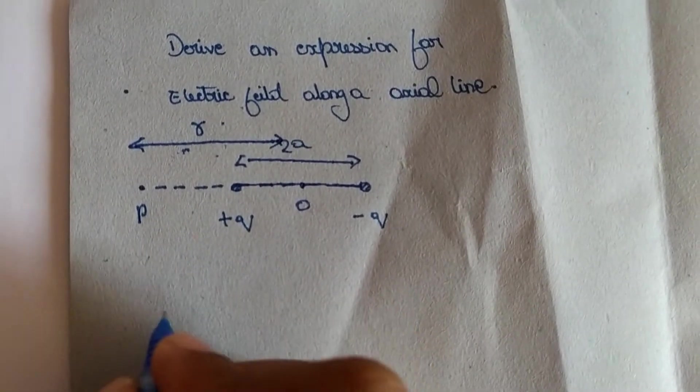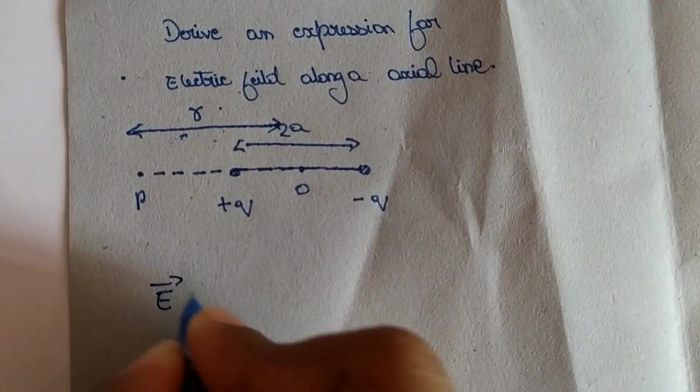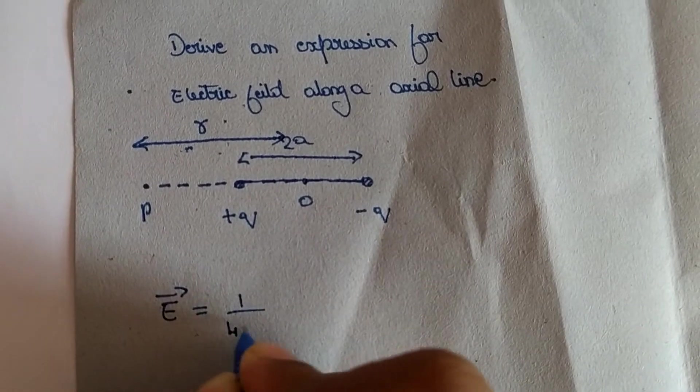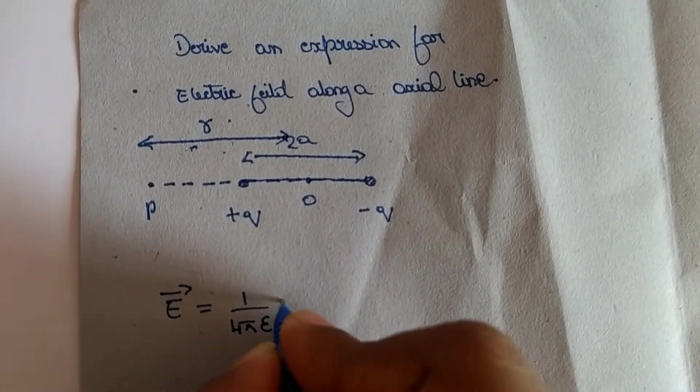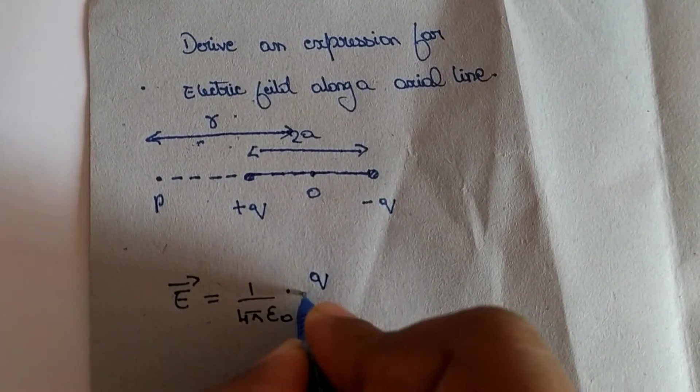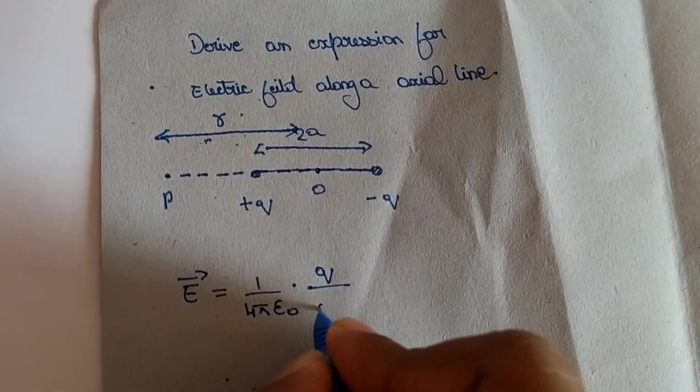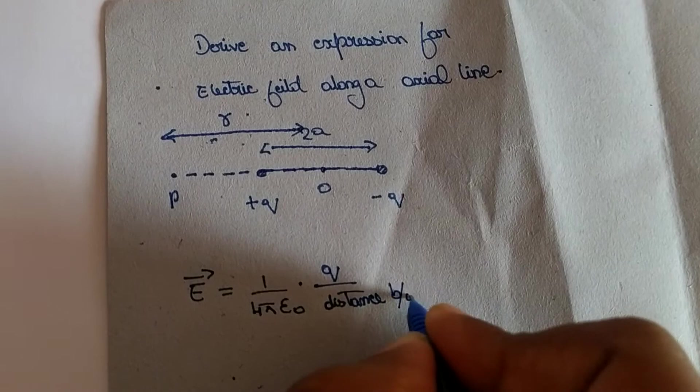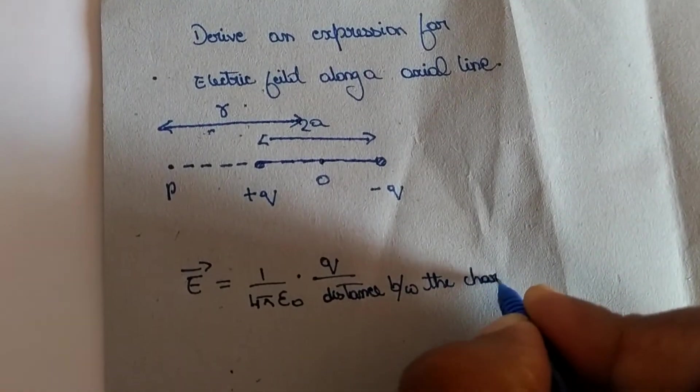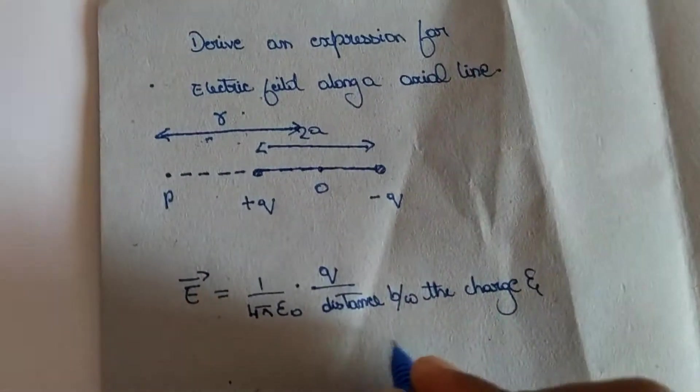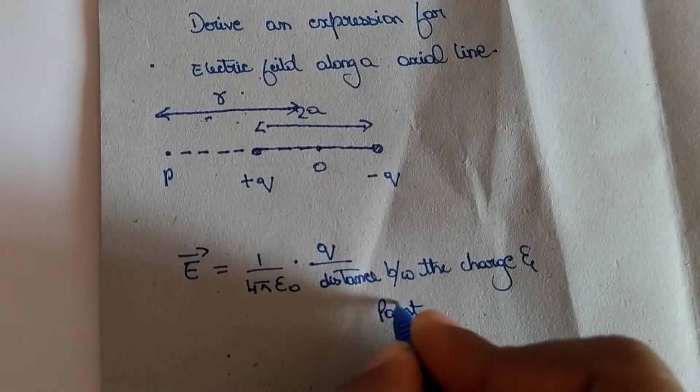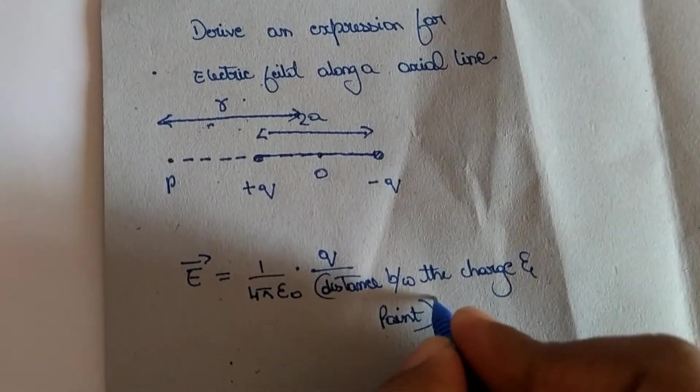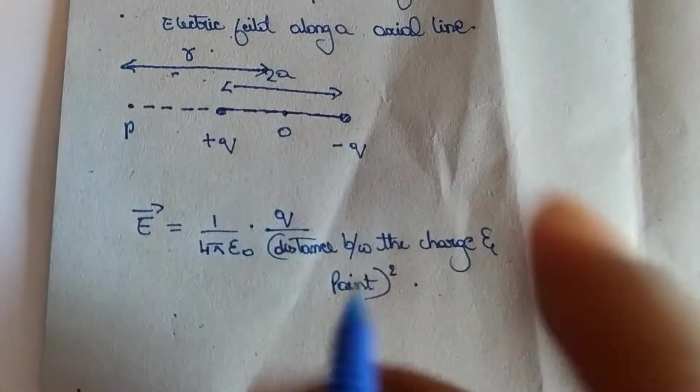Then from Coulomb's law we know the electric field at any point is given by 1 by 4 pi epsilon not into charge divided by distance between the charge and point whole square.